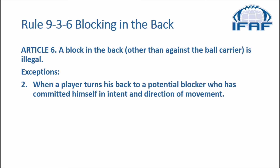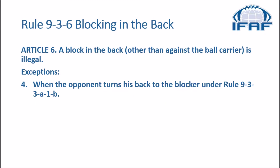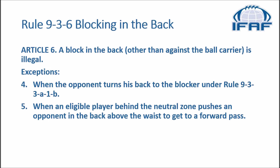Additional exceptions include: when the player turns his back to a potential blocker who has committed himself in intent and direction of movement; when a player attempts to reach a ball carrier or simulated ball carrier, or legally attempts to recover or catch a fumble, backward pass, kick, or touched forward pass, he may push an opponent in the back above the waist; when the opponent turns his back to the blocker under rule 933A1B; and when an eligible player behind the neutral zone pushes an opponent in the back above the waist to get to a forward pass.